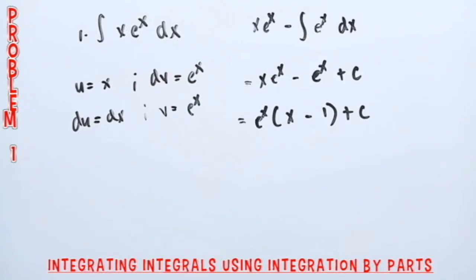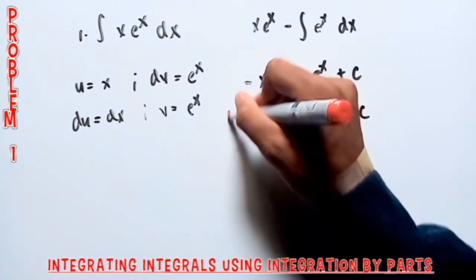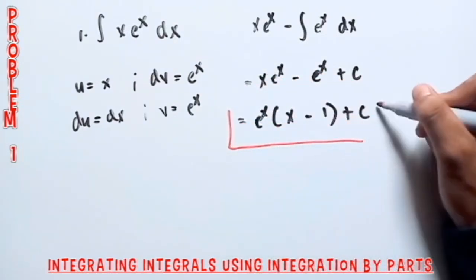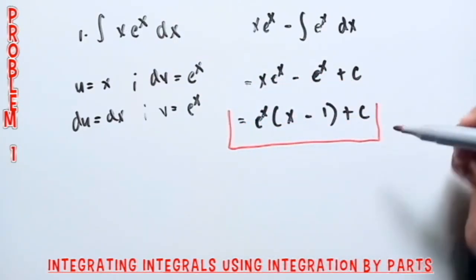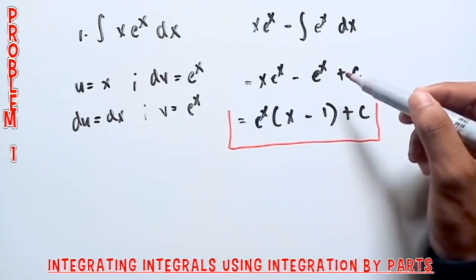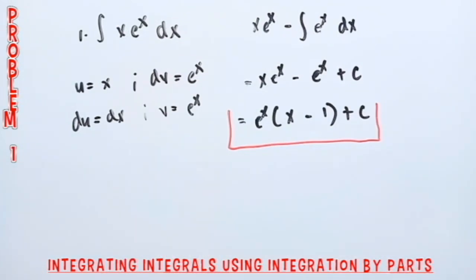We can simplify this by factoring e raised to x. So the final answer is e^x times (x minus 1), plus the constant of integration. This is our final answer. Let's proceed to the second example.